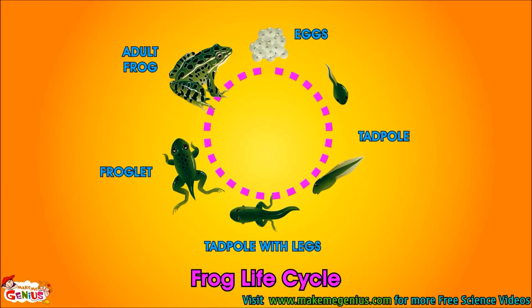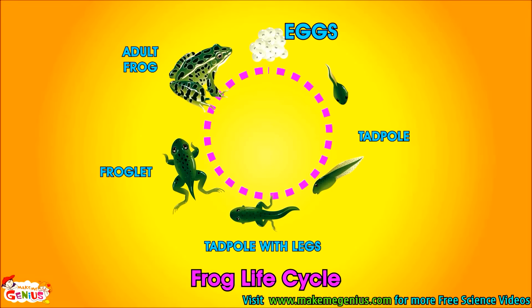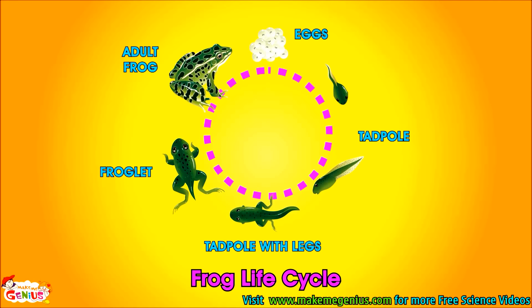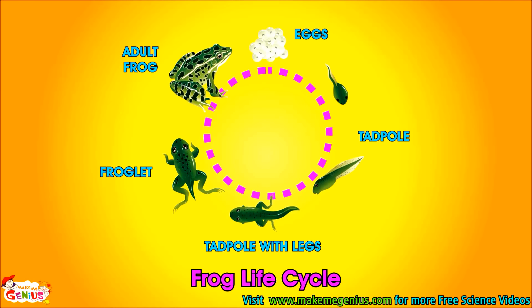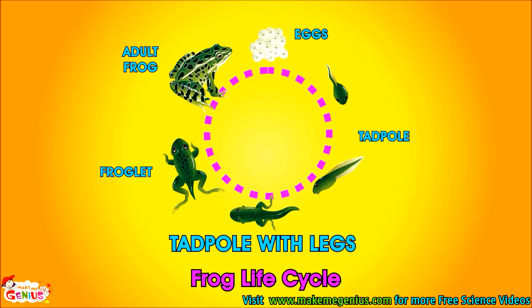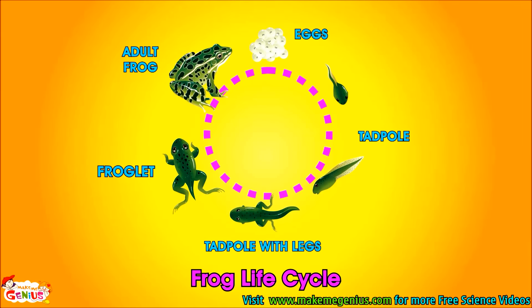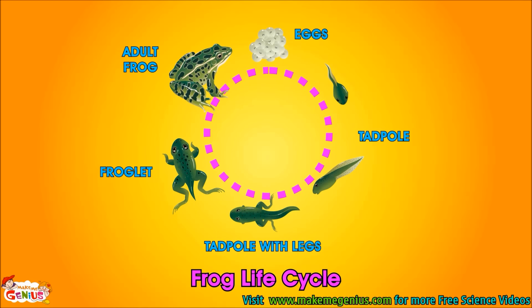Look at this complete life cycle of a frog. It starts from eggs, then tadpoles come out, who are like little fish. Slowly a change happens, and tadpoles develop legs and lungs, and then they become a complete frog.